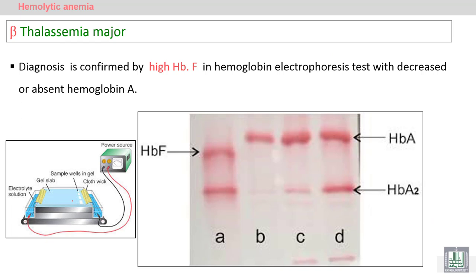Hemoglobin electrophoresis is also a confirmatory test to diagnose beta thalassemia major. In beta thalassemia major, we will find hemoglobin F in addition to hemoglobin A2, and absence of hemoglobin A.